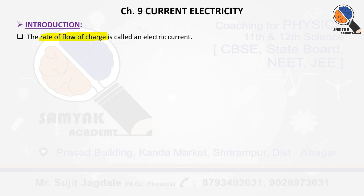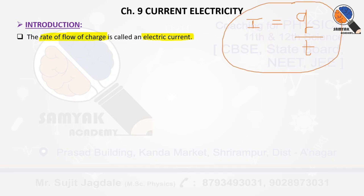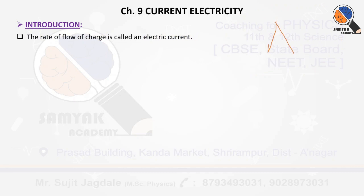The current is defined as the rate of flow of charge. Rate of flow of charge is called electric current. If you want to calculate the current, you can use the formula: I is equal to Q divided by T, where Q is charge. By using this formula you can calculate the current, and its SI unit will be ampere, denoted by capital A.